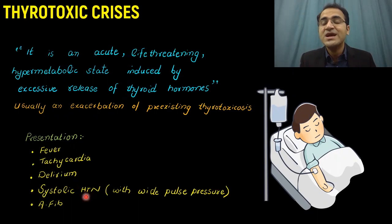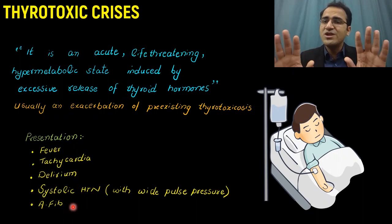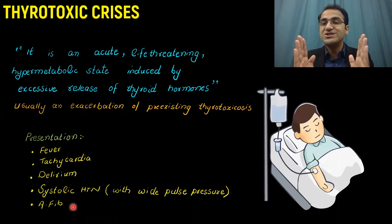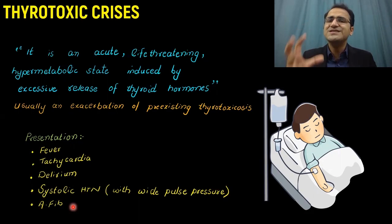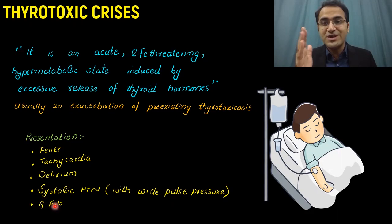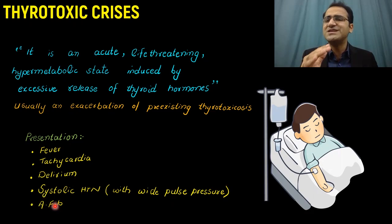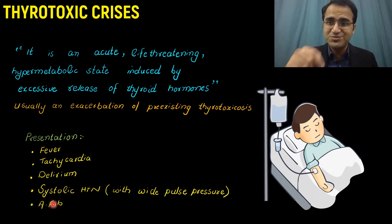Remember that thyrotoxicosis has a very strong correlation with atrial fibrillation. Thyroid disease has a strong correlation with atrial fibrillation. Due to excessive pumping of the heart, there is damage to the heart that results in abnormal rhythm generation, which results in atrial fibrillation. If you want to know about atrial fibrillation, treatment, management, and symptoms, I have a detailed video on atrial fibrillation — check out the link in the description below.